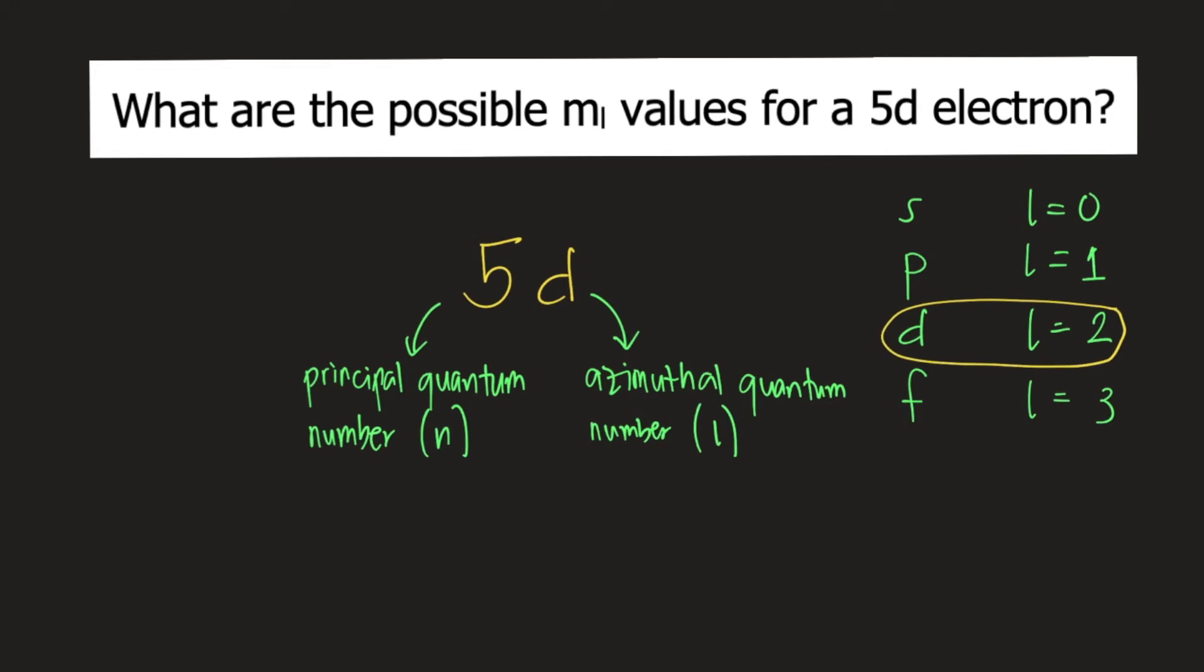Now the question is asking for the possible M sub L values. So what are the possible M sub L values? The possible M sub L values are the integers from negative L to positive L.